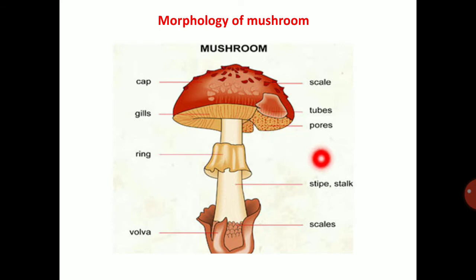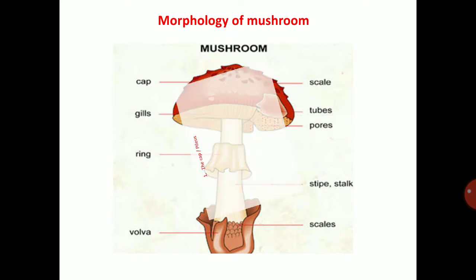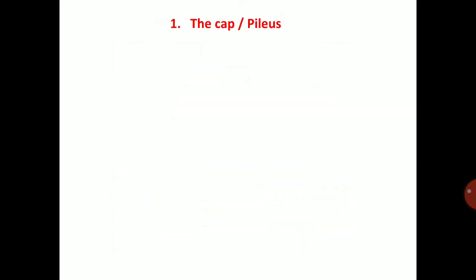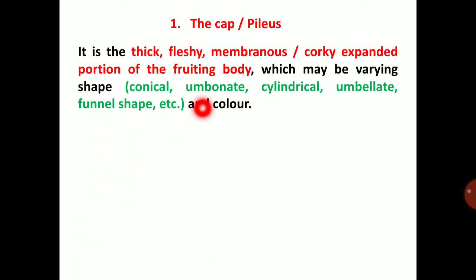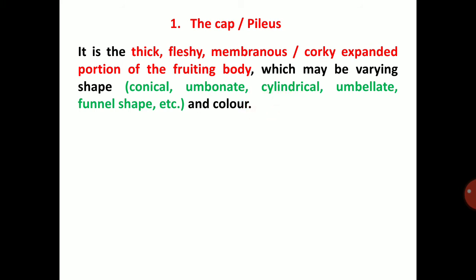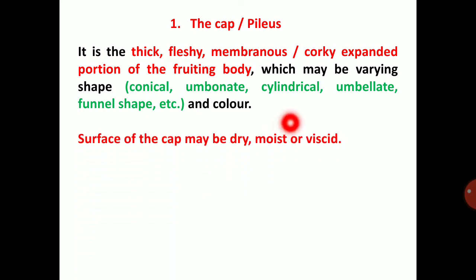The cap or pileus is a thick, fleshy, membranous or corky expanded portion of the fruiting body, which may vary in shape — conical, umbonate, cylindrical, funnel-shaped, etc. — and in color. The surface of the cap may be dry, moist, or viscid.